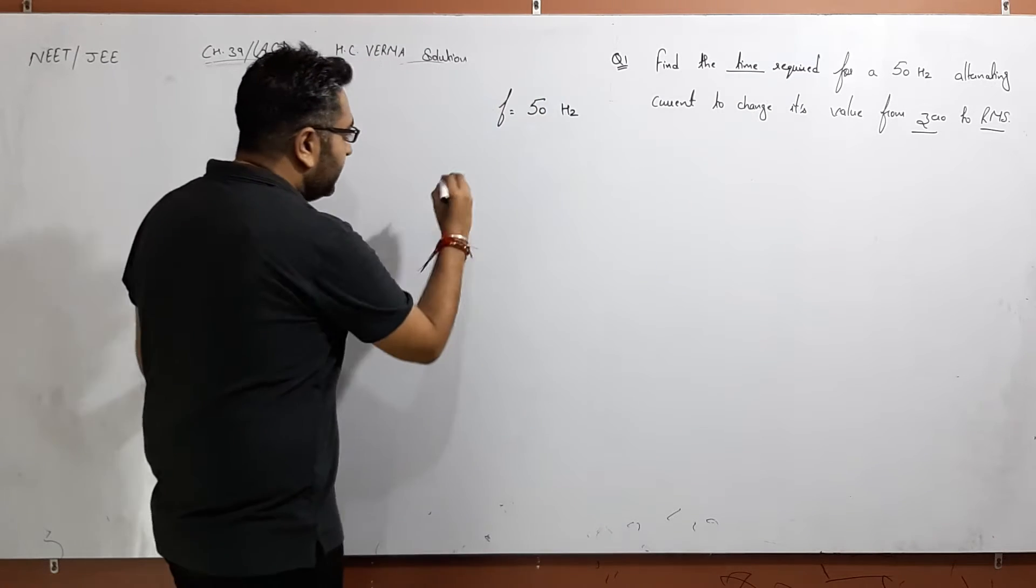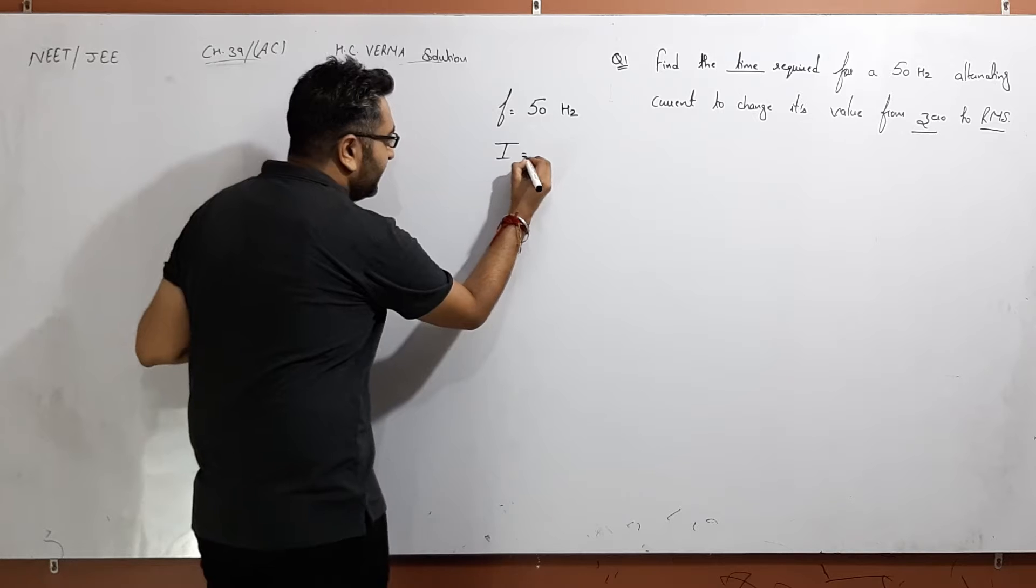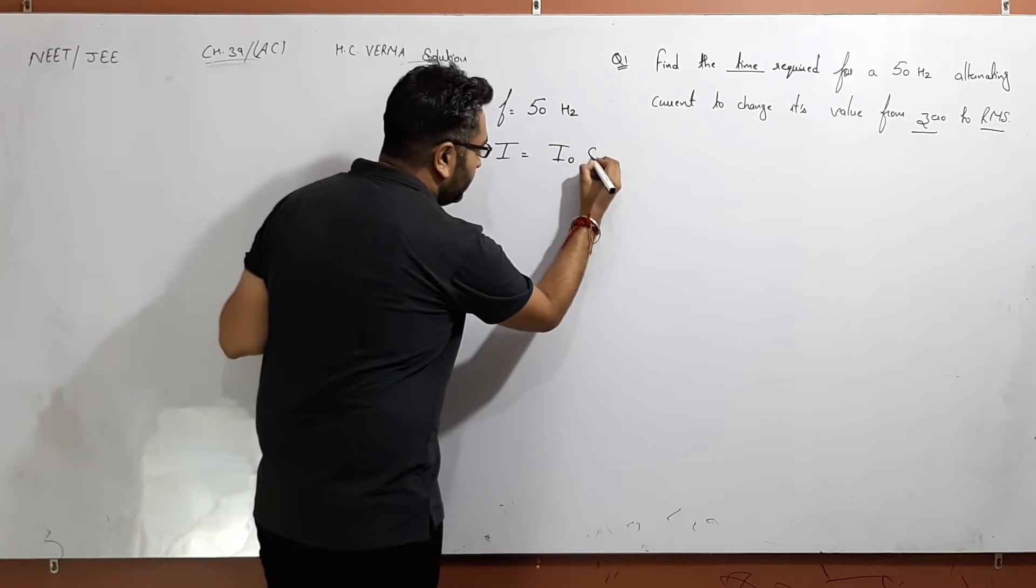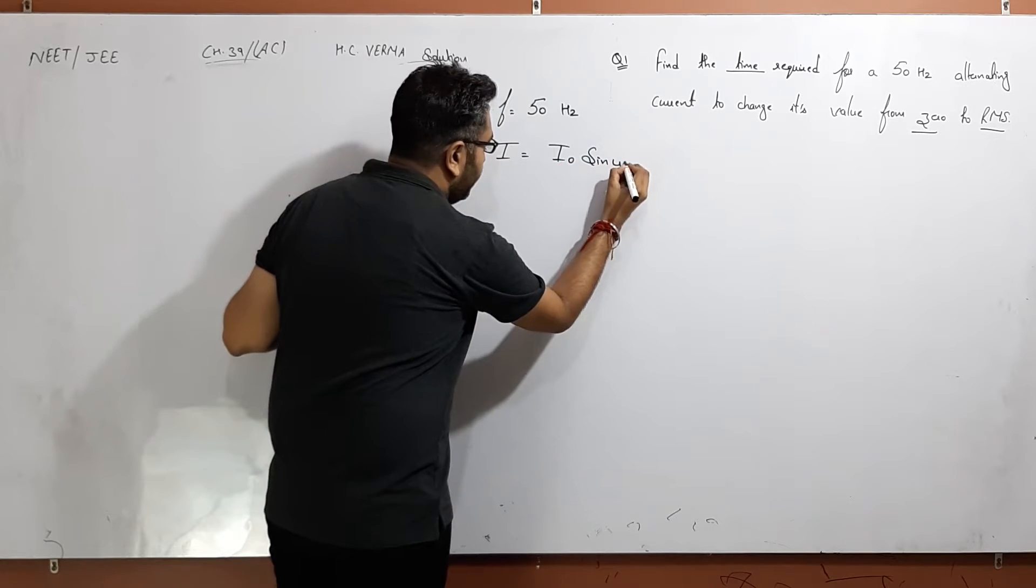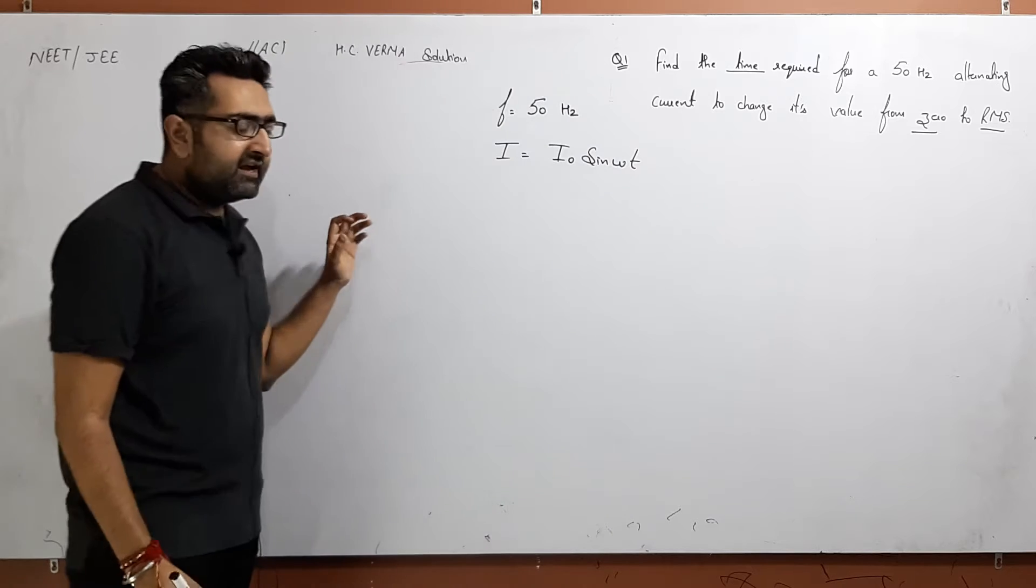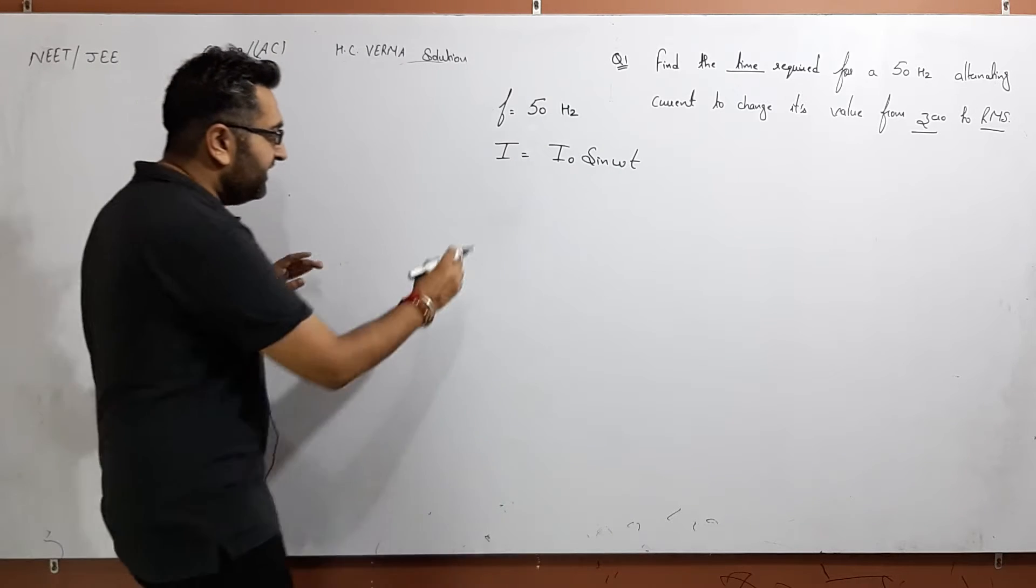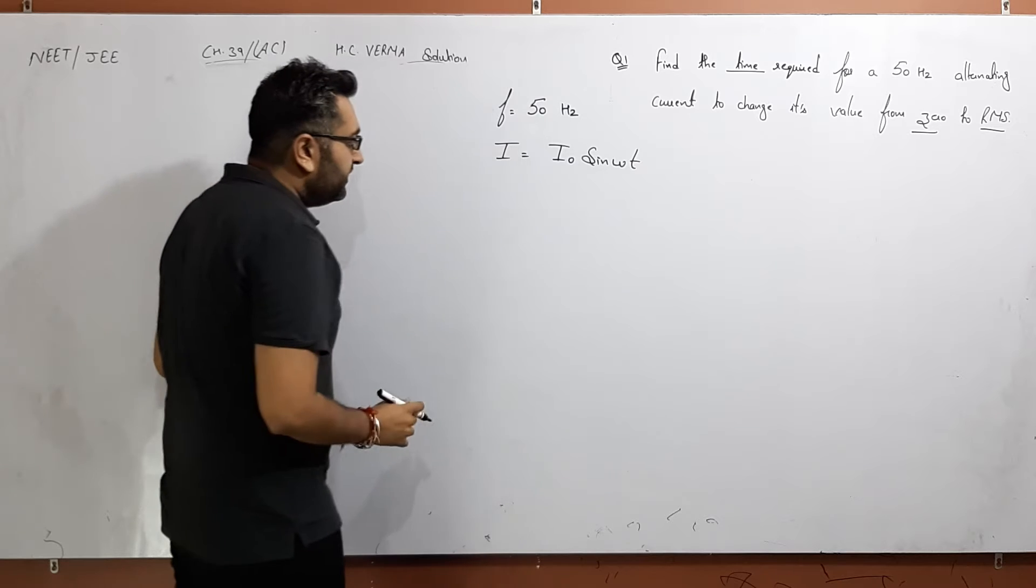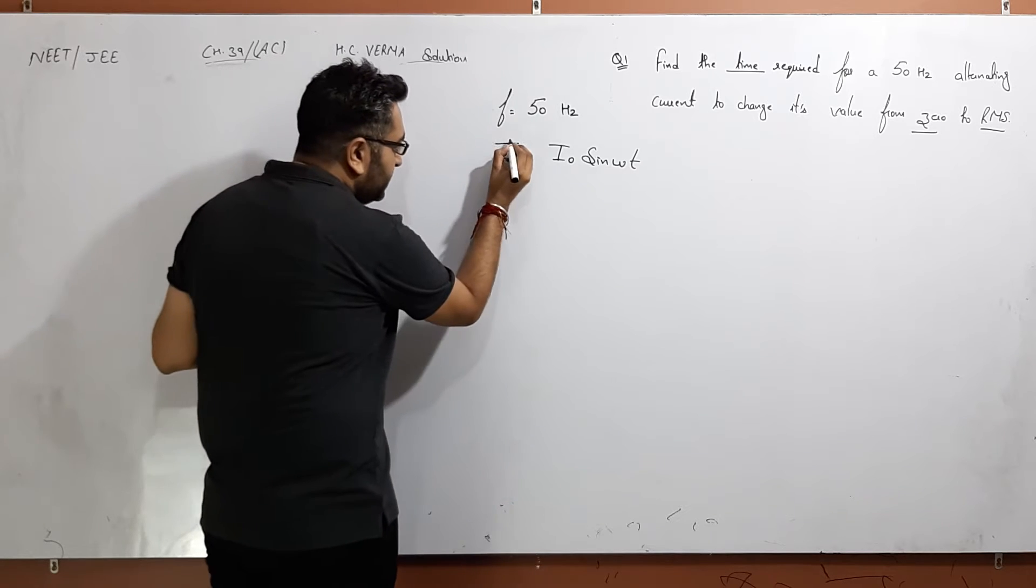For this we need to have a current equation and relation: I is equal to I naught sin omega t. If you have your alternating current, you are aware of it. I is equal to I naught sin omega t, right?